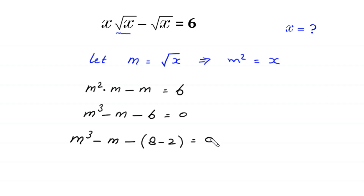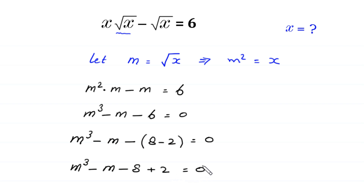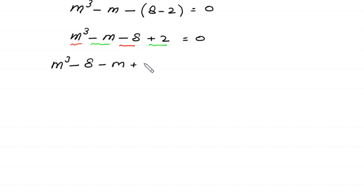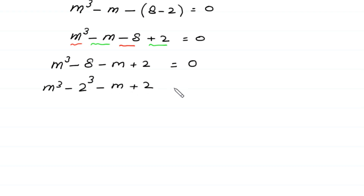Next, m cubed minus m minus 6 can be rewritten by splitting the 6 as 8 minus 2. The minus sign changes the signs, so we get m cubed minus 8 minus m plus 2 is equal to 0.